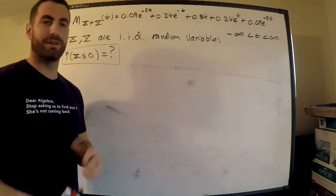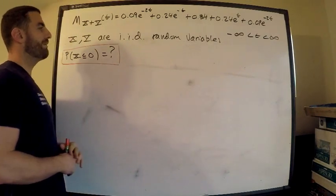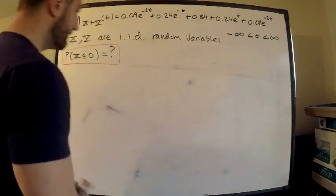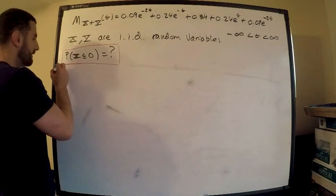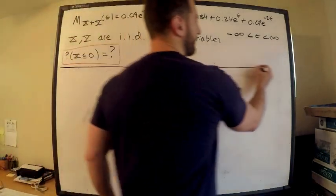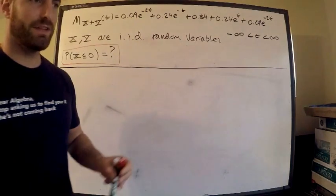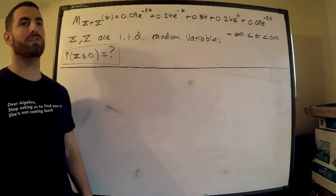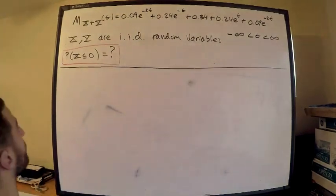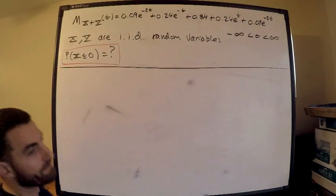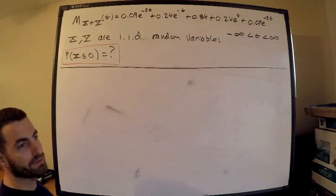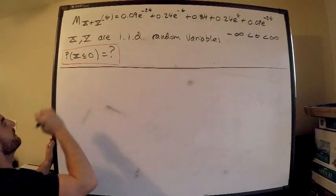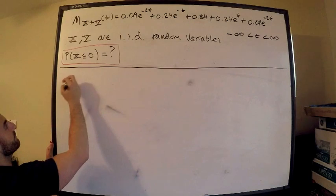We want the probability that X is less than or equal to 0. For these exam problems, everything they give you, you need — if you don't use it, you probably messed up. A key fact you need to know: for independent random variables, the moment generating function of the sum equals the product of their individual moment generating functions.